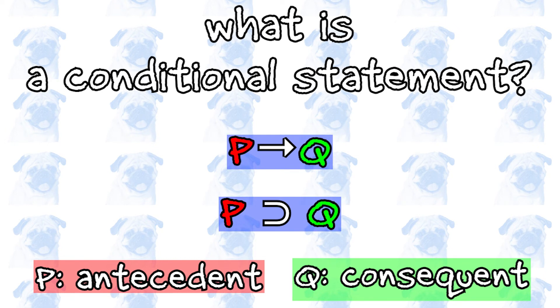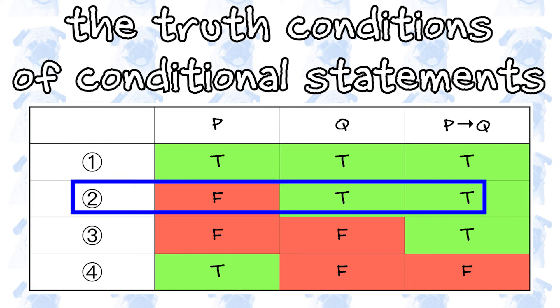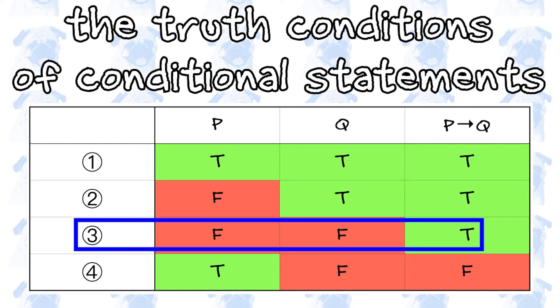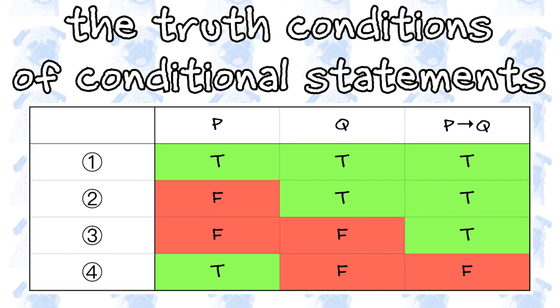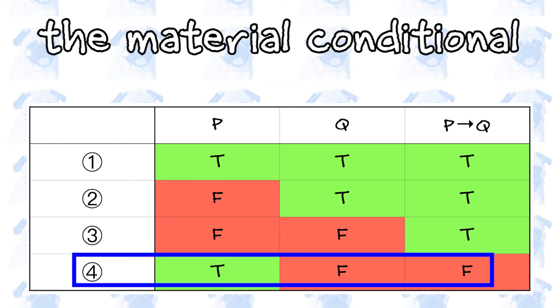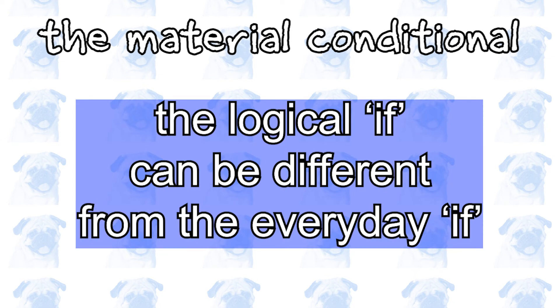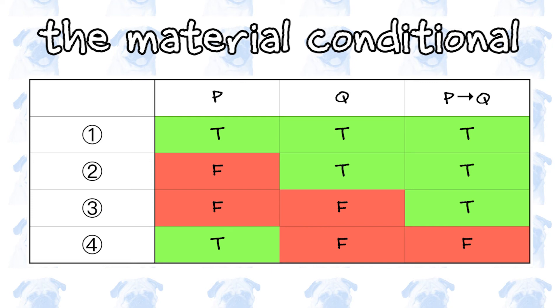A conditional statement in this form is true in the following three cases. In other words, a conditional statement is true unless P is true while Q is false. The logical operation that follows this rule is called the material conditional. The material conditional has some counterintuitive properties and must therefore be distinguished from the conjunction 'if' that we use in everyday language. In order to see the peculiar properties of the material conditional, let's examine each of its three truth conditions.